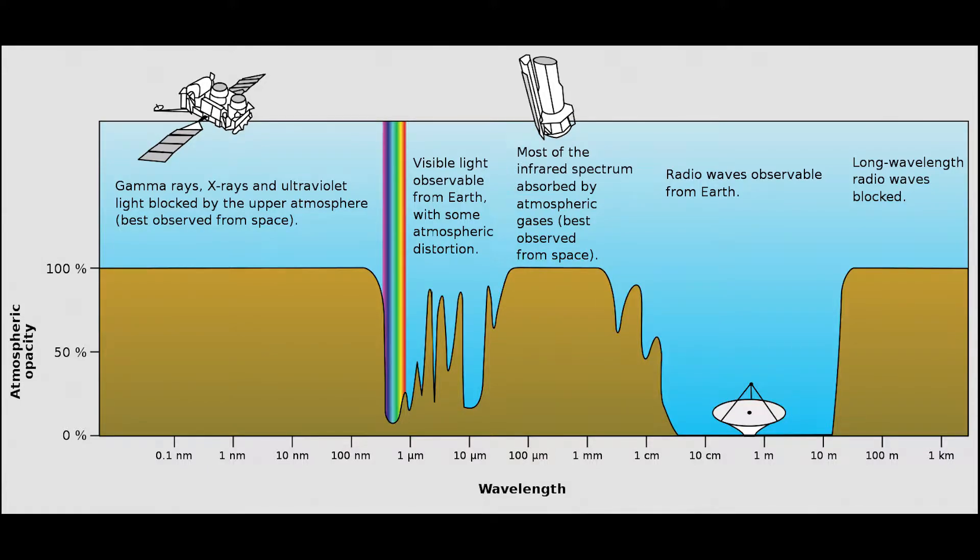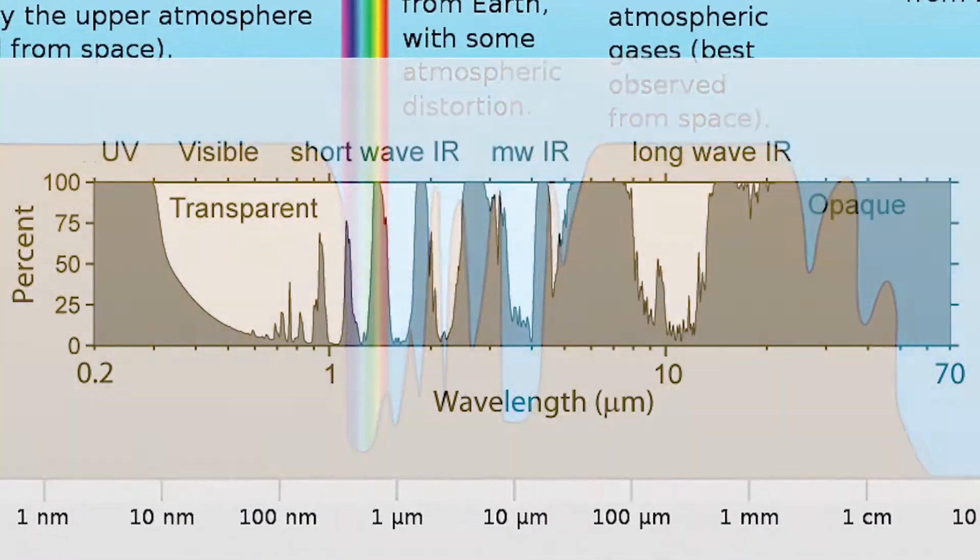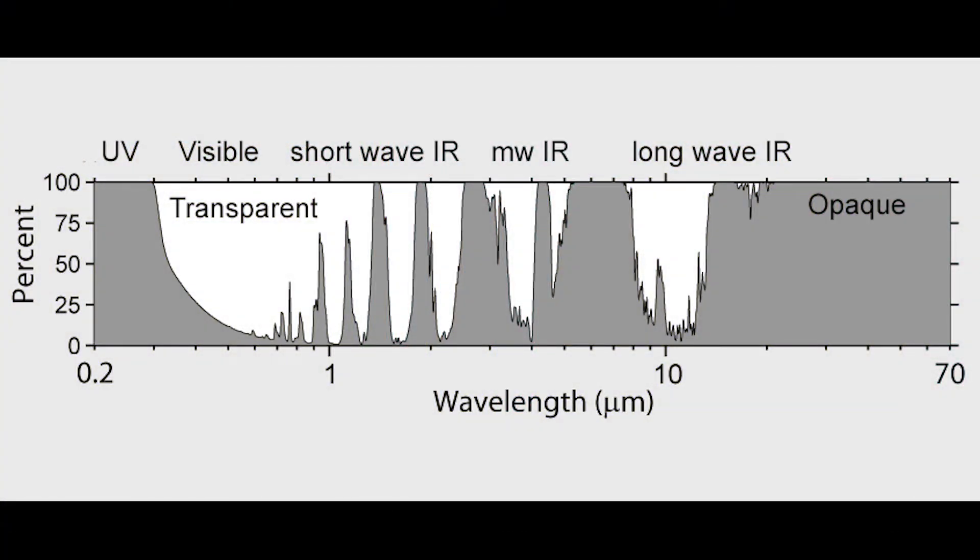If we zoom into the infrared range, we can see that air transparency variation close up. Infrared is often divided up into three ranges based on the technology we have for detecting them.